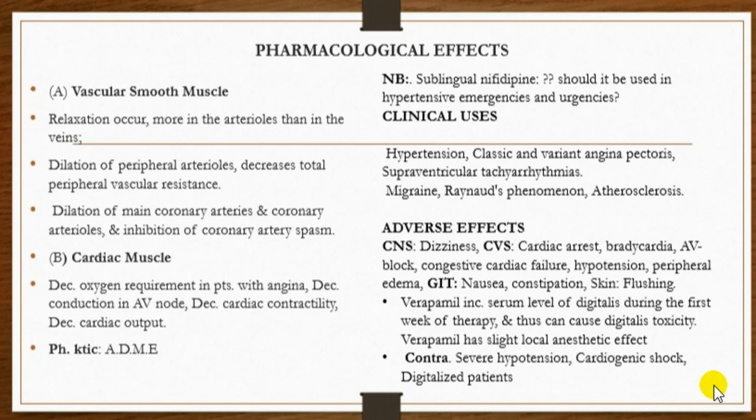Calcium channel blockers are also used in the management of both classic and variant angina pectoris, working by reducing the afterload on the heart. Note that they are not first-line treatment in unstable angina, but may be added to nitrates when coronary spasm is imminent or when nitrates alone cannot prevent coronary artery spasm. They are also used in supraventricular tachycardia and in the prevention of migraine and cluster headaches.